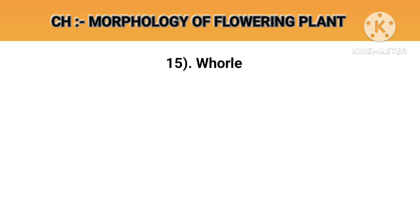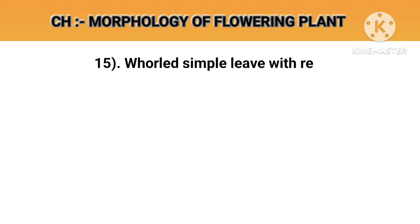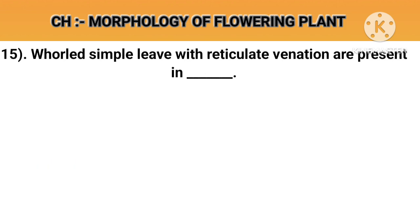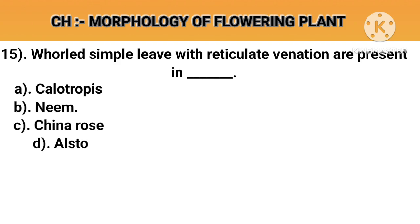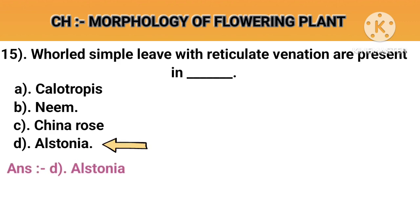Question number 15. Whorl with simple leaves with reticulate venation are present in. Option A: Calotropis. Option B: Neem. Option C: China rose. Option D: Alstonia. Answer D: Alstonia.